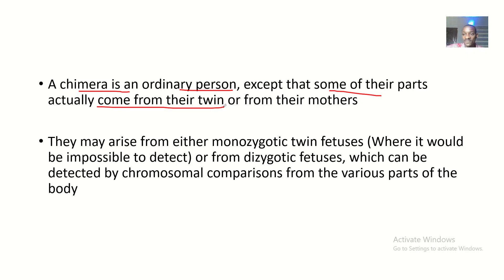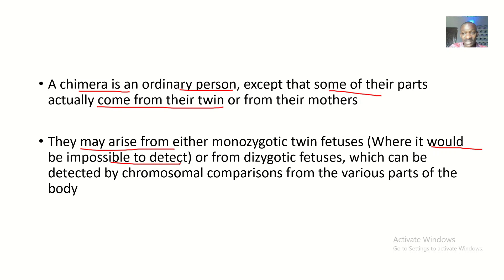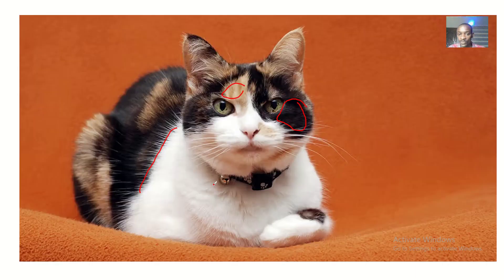This fusion may happen right from the stage of them being a zygote, so you grow up having some parts of your body that look totally different from the rest. Chimerism may arise from either monozygotic twin fetuses — twins that look alike — where it will be impossible to detect, or from dizygotic twin fetuses, where it can be easier to detect by chromosomal comparisons from various parts of the body.